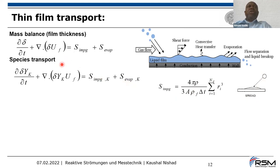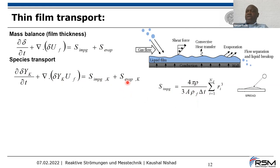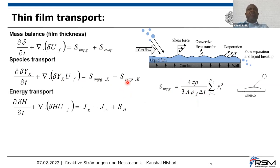We also transport species, and the species equation is multiplied by the film thickness. We have the convective part and additional source terms. We also have the energy transport equation with two additional source terms: the liquid-gas interface source term and the liquid-wall interface source term due to film evaporation, plus the source term due to spray impingement.